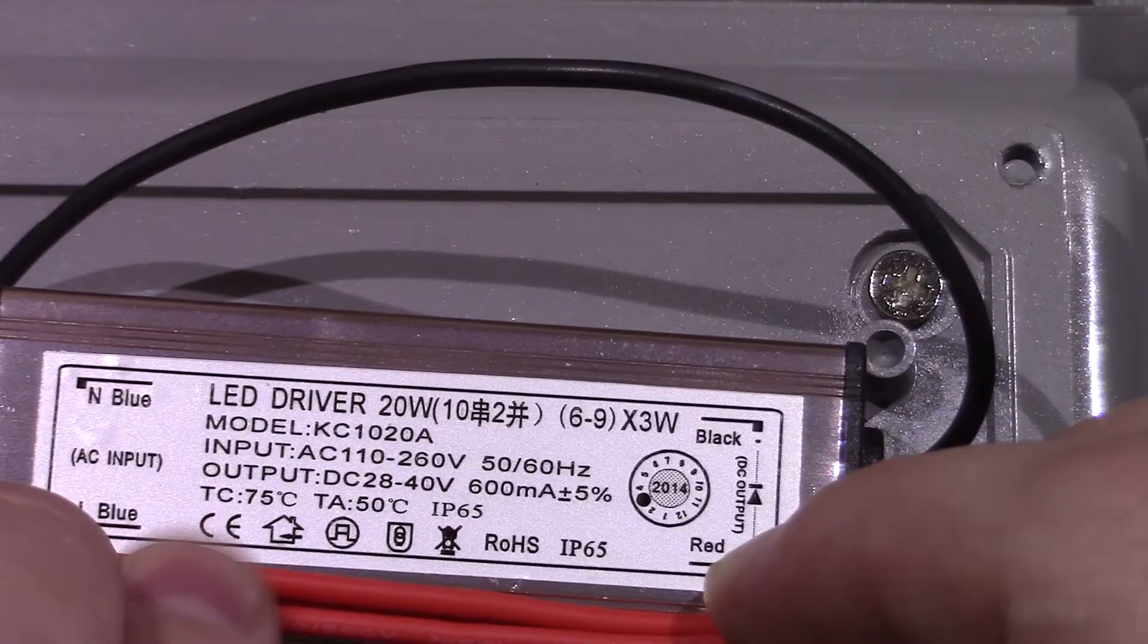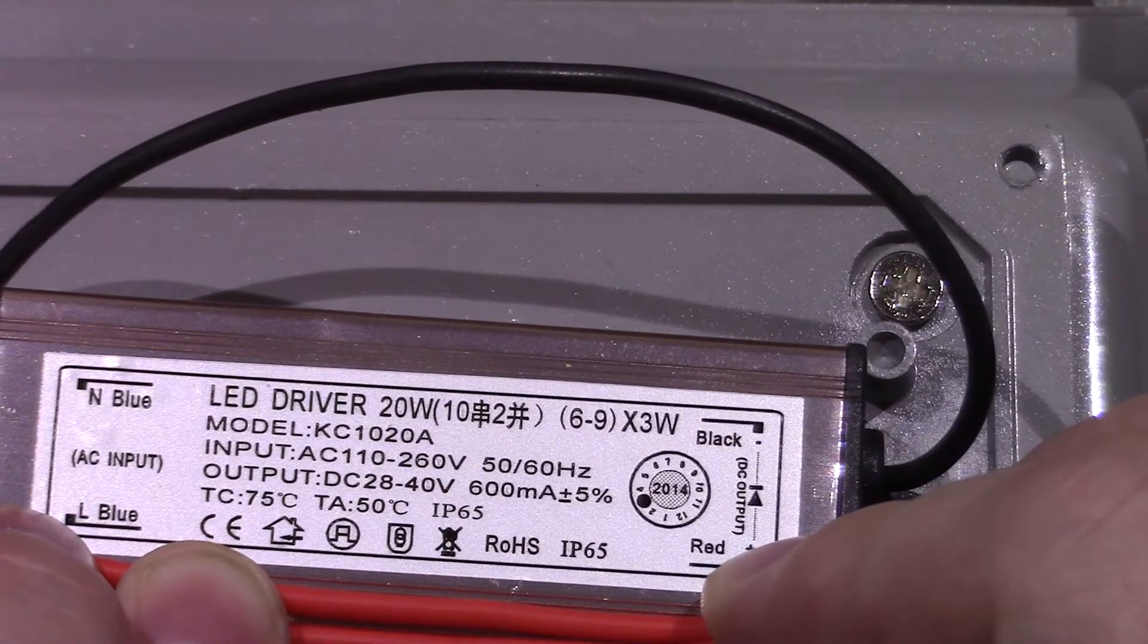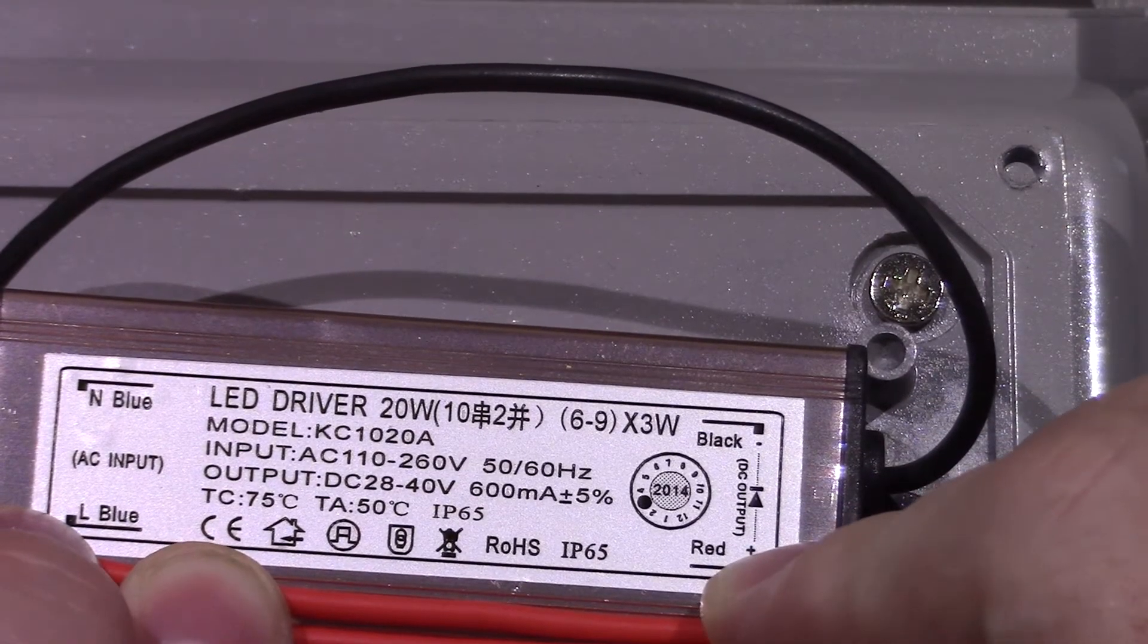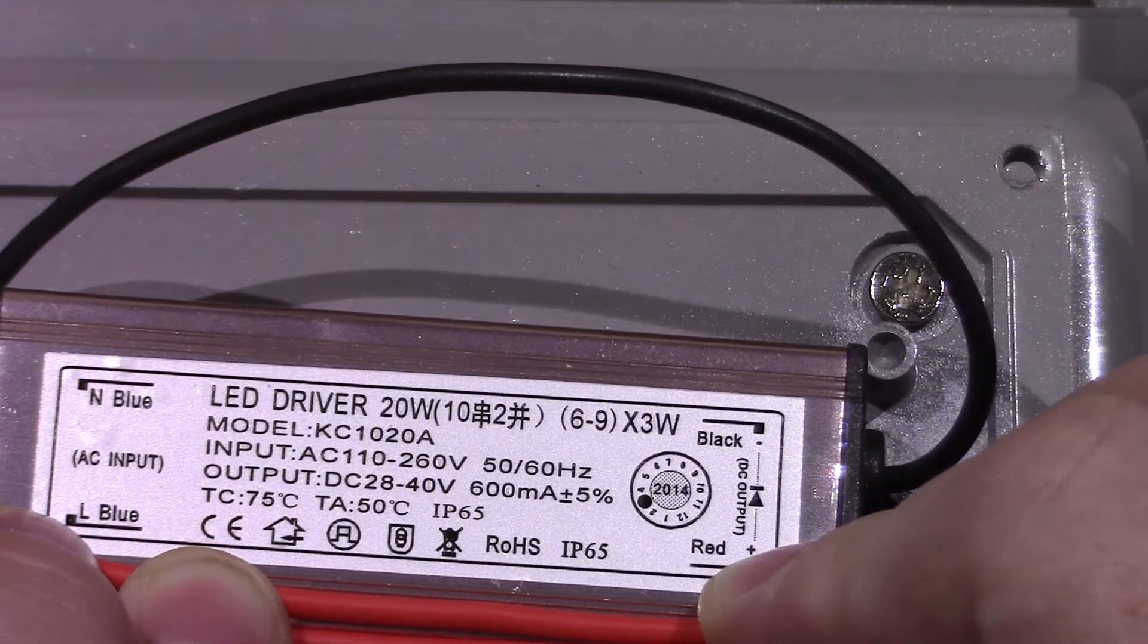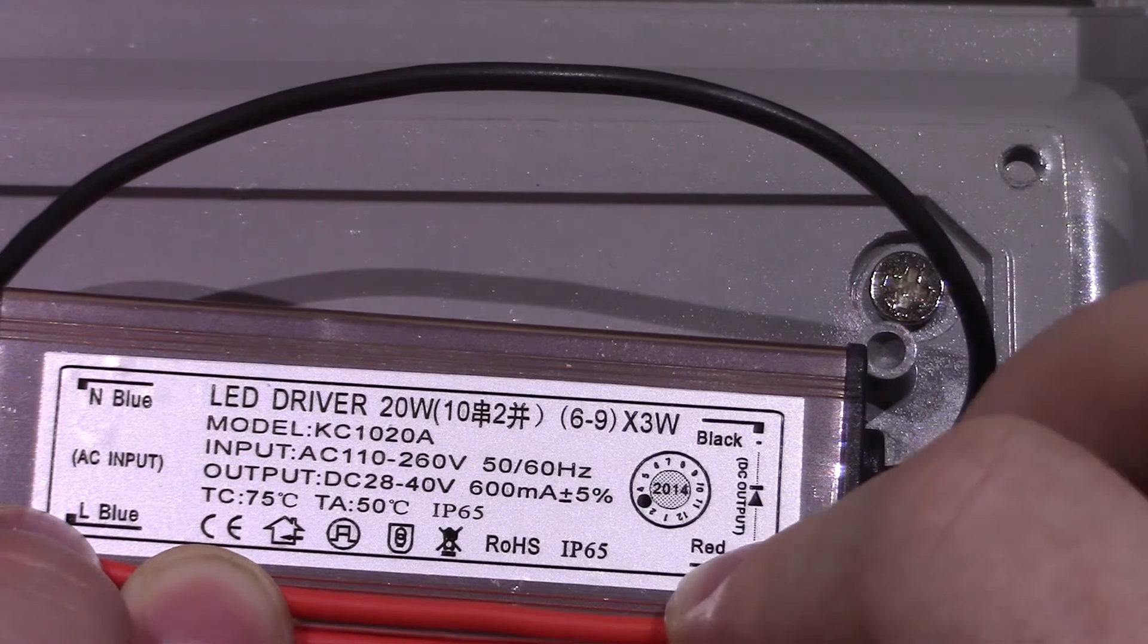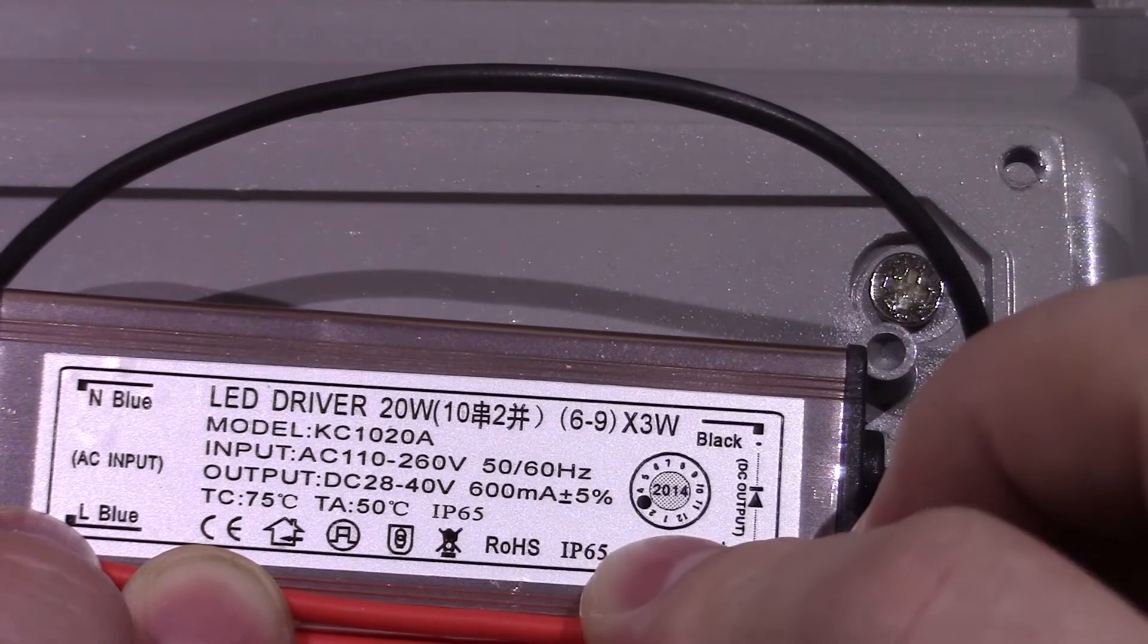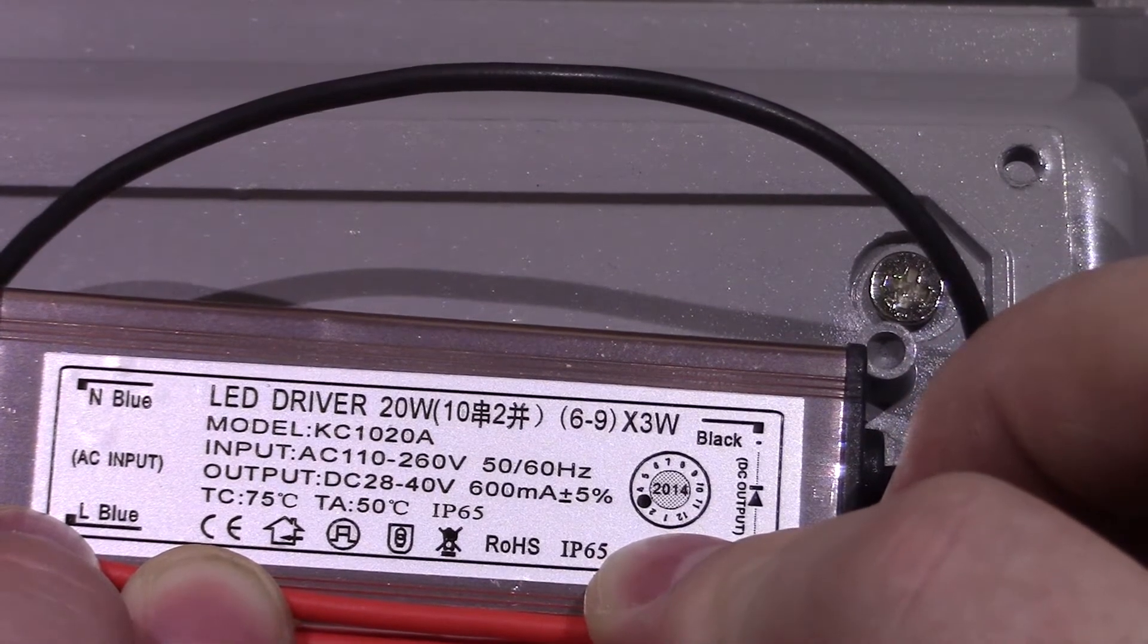Let's just have a look at the transformer. Here's our LED driver. 20 watt. Model number there, as you can see, KC1020A. Input there. It's actually got 110 volts AC there, whereas the outside specifies 85, so that's a bit wrong.